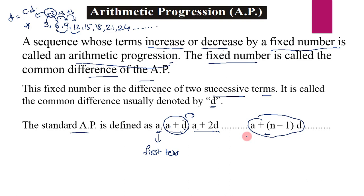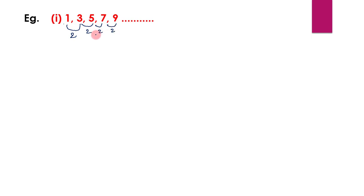Let us see two examples to understand AP better. Example 1: 1, 3, 5, 7, 9 and so on. To verify whether it is an AP, we take the difference between successive terms: 3-1=2, 5-3=2, 7-5=2, 9-7=2. The difference between every two successive terms is the same, so this is an AP with first term a=1 and common difference d=2.